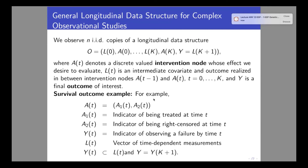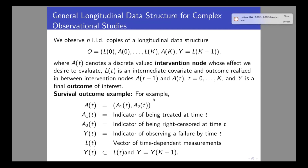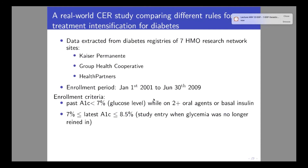These longitudinal causal quantities and target estimands are more complex due to feedback loops, but ultimately it again becomes a pure estimation problem — learn how the future depends on the past using machine learning, then do targeting toward the estimand. Miraculously, the targeting step removes all bias even when initial estimators are wrong, as long as treatment and censoring mechanisms are well estimated. We apply this to Kaiser data comparing different rules for controlling glucose levels and their impact on patient survival curves.